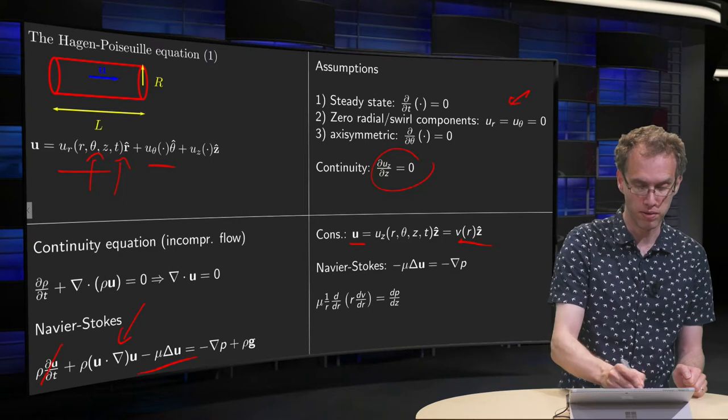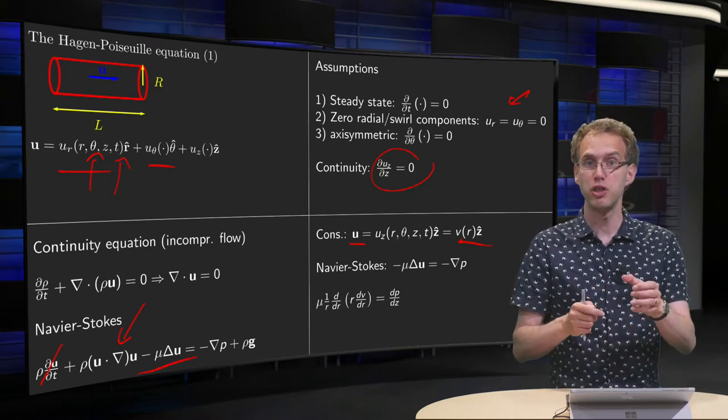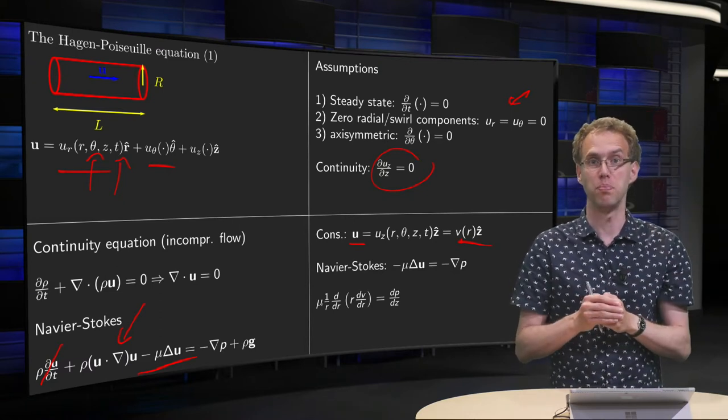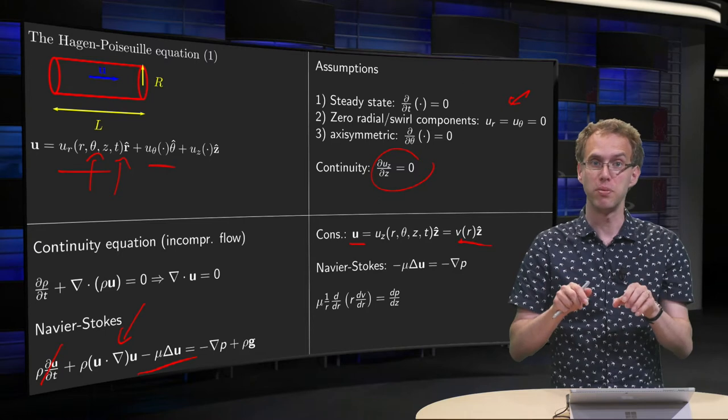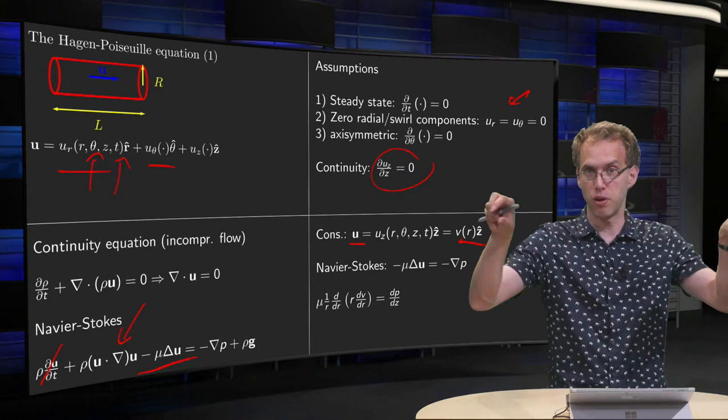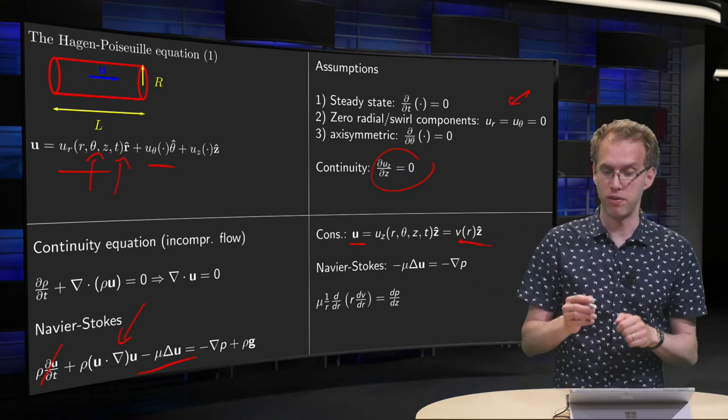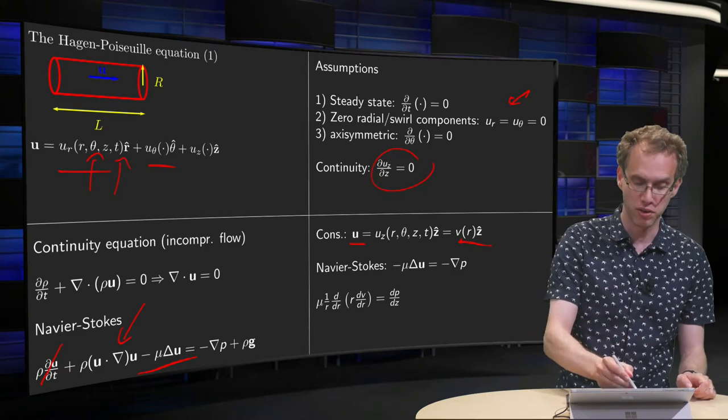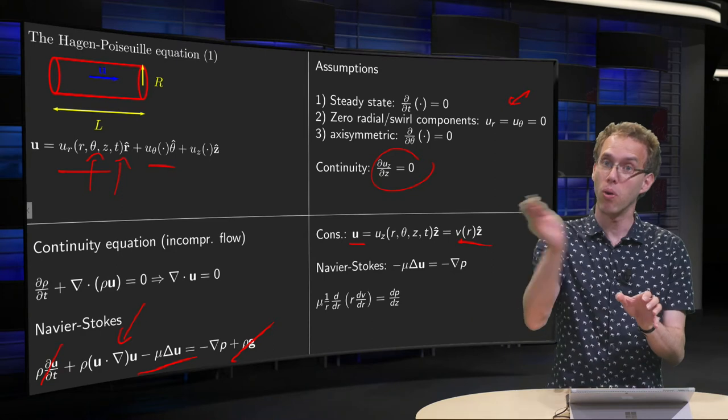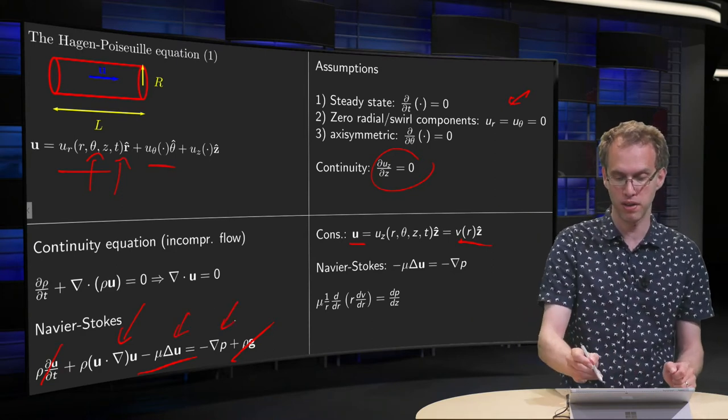And then what about the gravity? Well, if your tube is in the z-direction, you can absorb the gravity into p, and if your gravity is not in the z-direction, so you have a horizontal tube, then you can neglect gravity. So for now, slight abuse of notation, we will just neglect this term, because either you can neglect it or put it in your pressure. So you have these two terms left over here. That's where we have our Navier-Stokes.